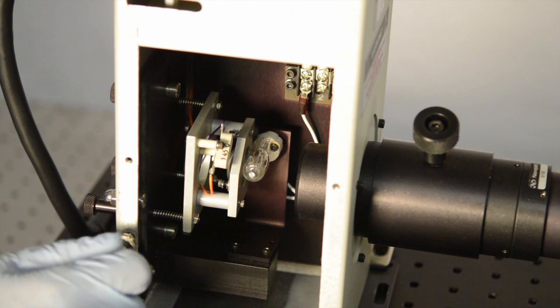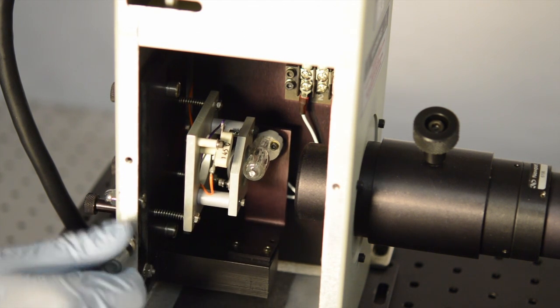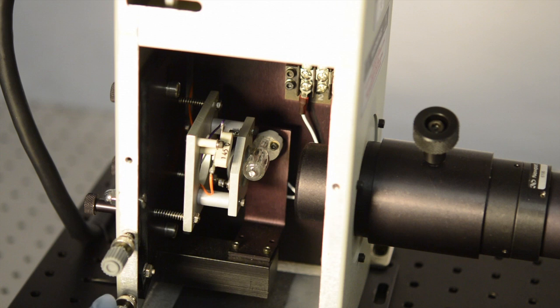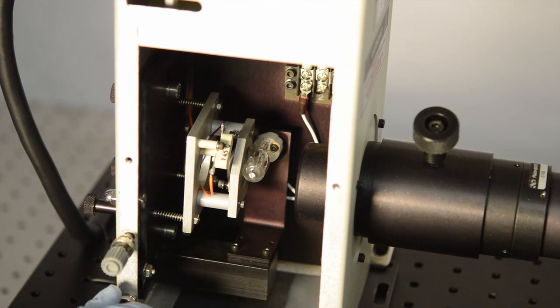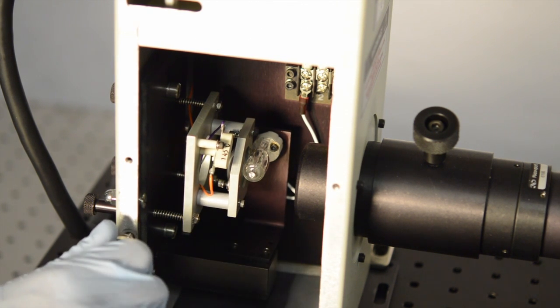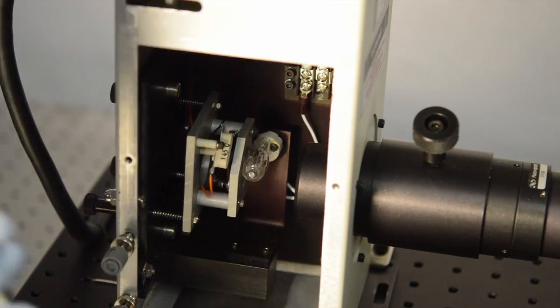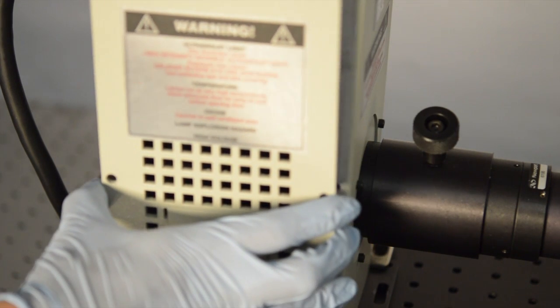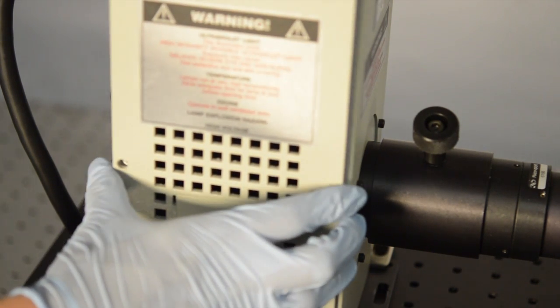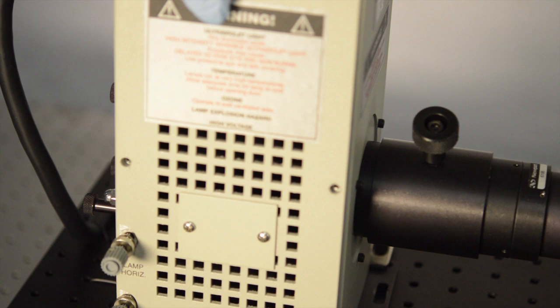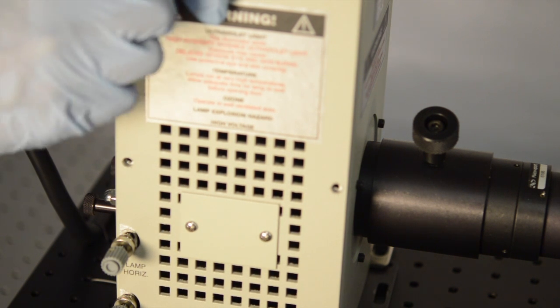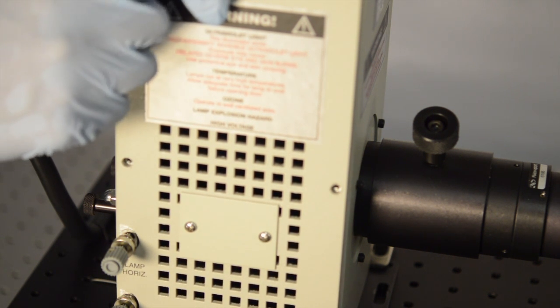Once you're done you can fix the side panel of the lamp housing back on and replace those six thumb screws that were holding the side panel of the housing in place.